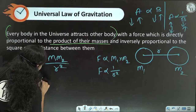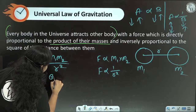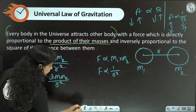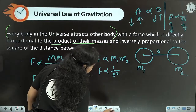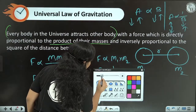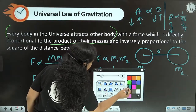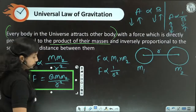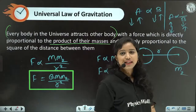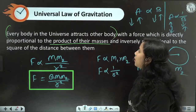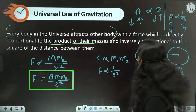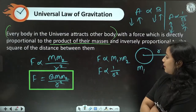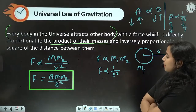That proportionality constant is G — the gravitational constant. So this is the universal law of gravitation.